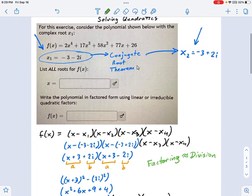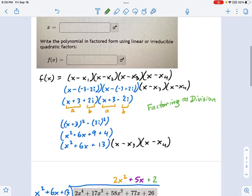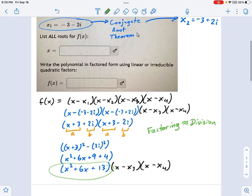We need a way to divide that by this quadratic. And if I can do that, I'll find the remaining two factors.